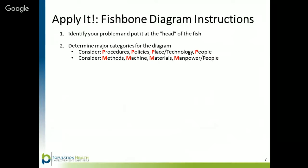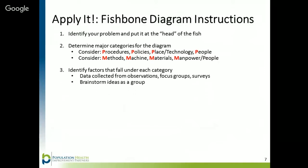After choosing your categories, the third step is to identify factors that fall under each category. To do so, you can use any data currently collected from observations, focus groups, or surveys. Have your team brainstorm ideas as a group for each category. When identifying factors contributing to the problem, try to focus on the people or manpower category last, as blame for an issue can fall on an individual when the process or materials that person is working with are truly at fault. Saving the people category for last prevents faulting a staff member before thinking through all system causes.